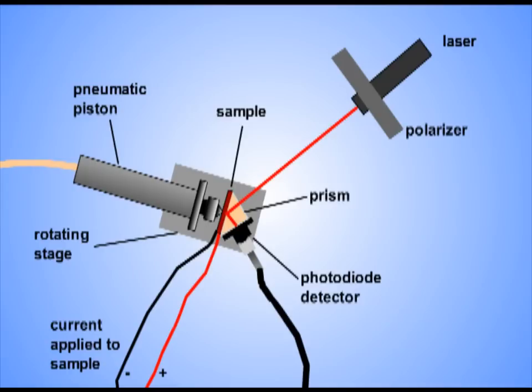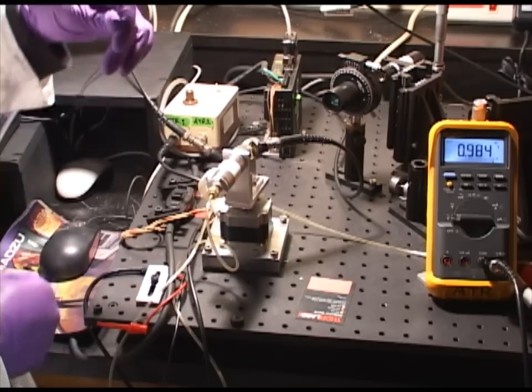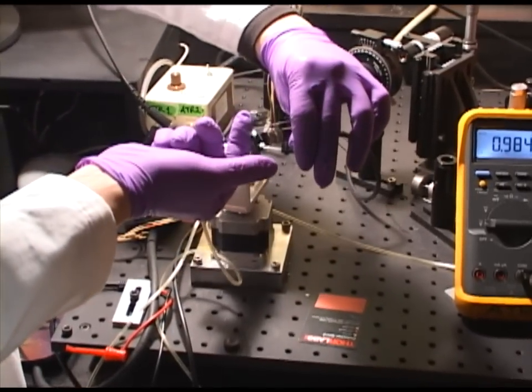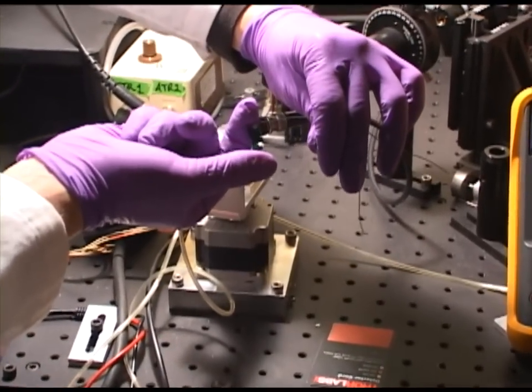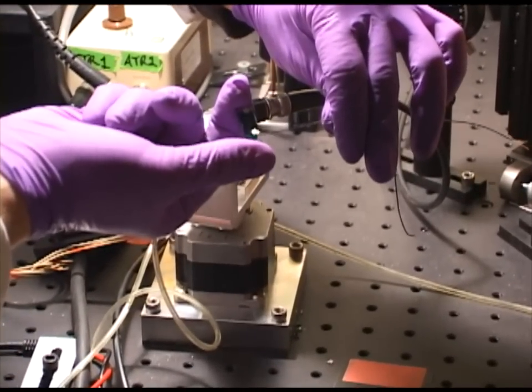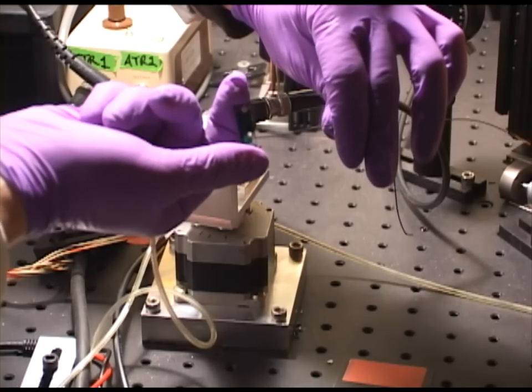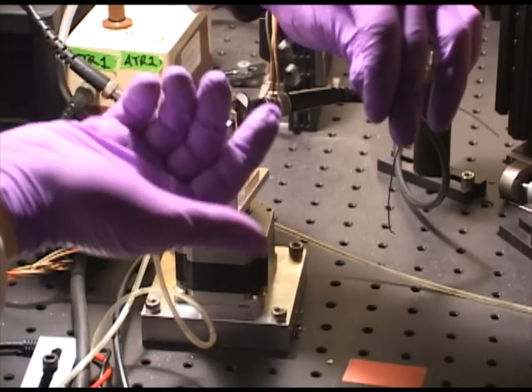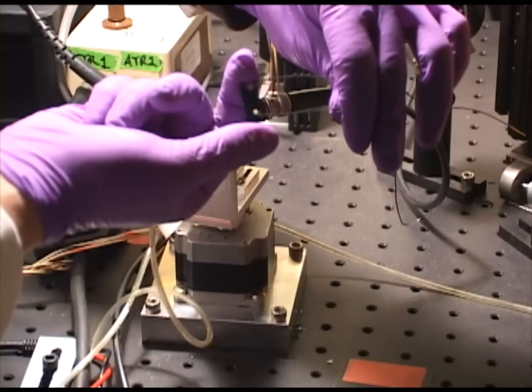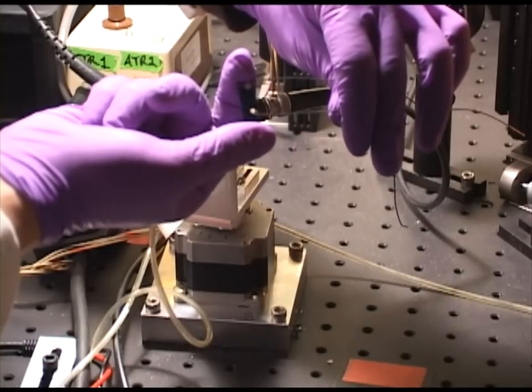This device works by coupling a sample to a prism using a pneumatic piston. Samples are an ITO glass slide that has been spin coated with a polymer and chromophore host, which is the material of interest, and then sputter coated with gold electrodes. This material was then poled using a Teng-Man in situ poling device.